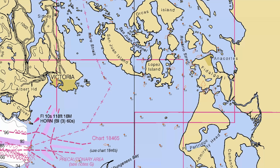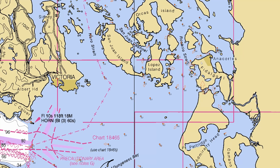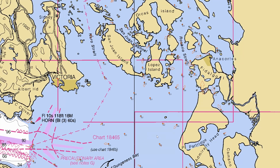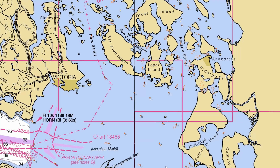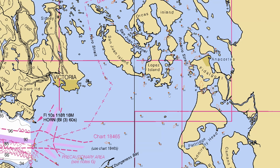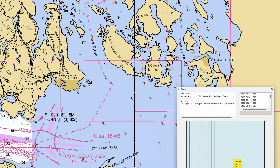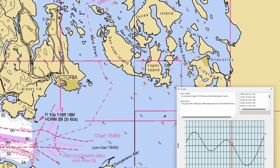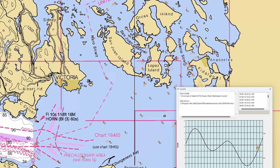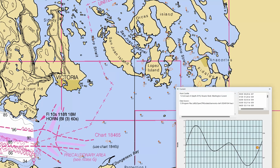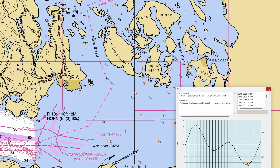Here in OpenCPN, we have some currents showing up. I use OpenCPN for a lot of my pre-planning. You can go to any of these currents and look at what they'll look like over the course of the day, going day by day to see what the currents are going to be. As you do that, you get a sense for the timing of the currents.